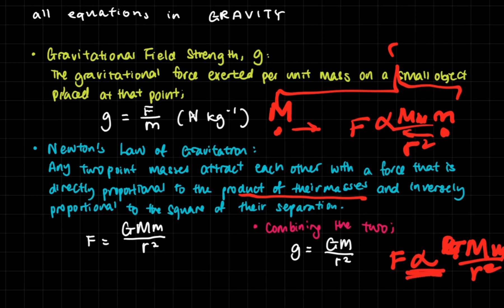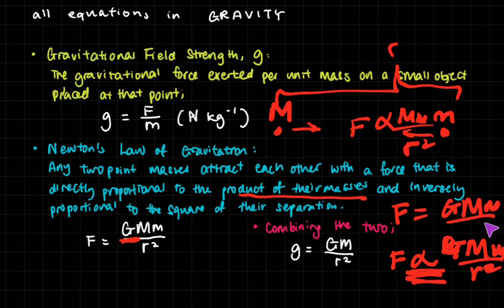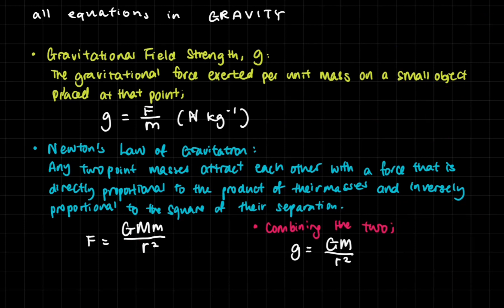To remove the proportionality sign, we attach a constant of proportionality. In this case it's G, the universal gravitational constant, which you can find on the first page of the A-level exam formula sheet — so you don't need to memorize it. The full equation becomes F equals GMm over R squared. You can derive this formula directly from the word statement of Newton's law of gravitation, which is pretty neat.